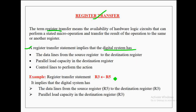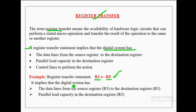For example, the statement R3 ← R5 indicates that binary information from R5 is loaded into register R3. Here R5 is the source register and R3 is the destination register. This register transfer statement implies that data lines exist from source register R5 to destination register R3, and that R3 has parallel load capacity.